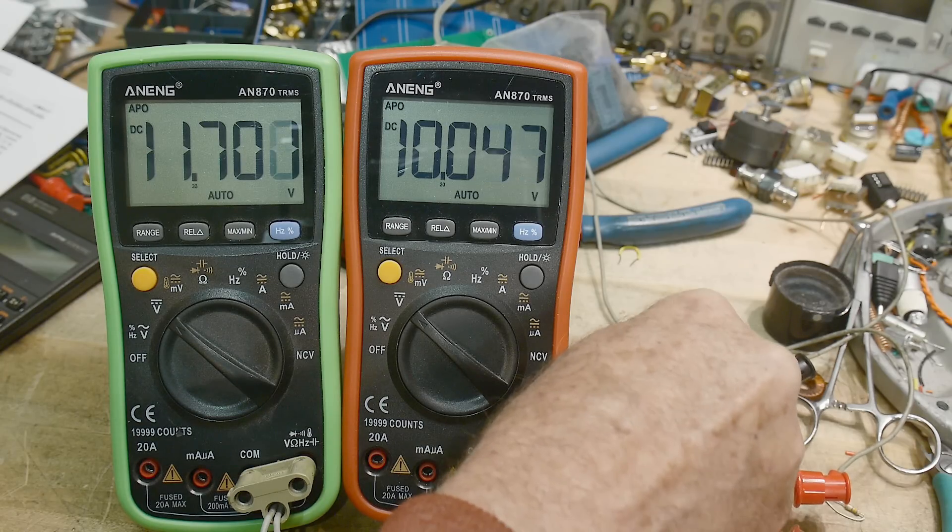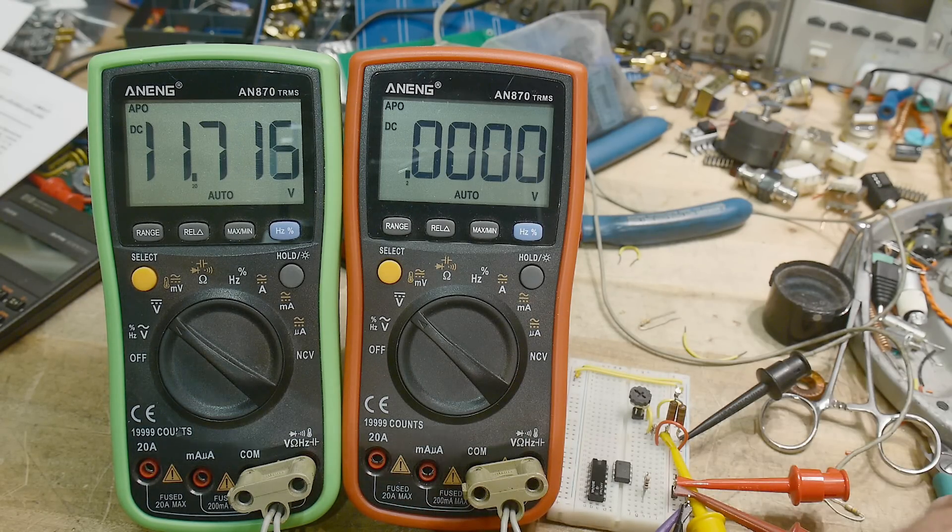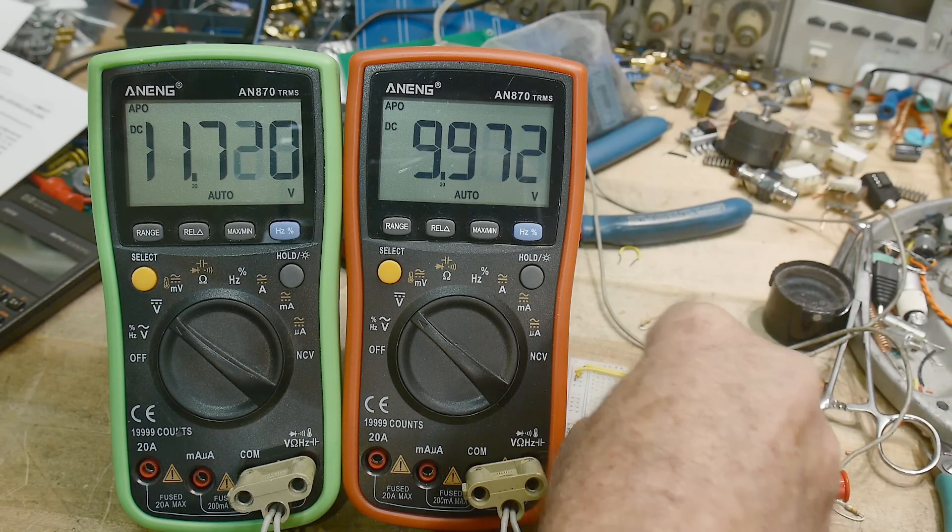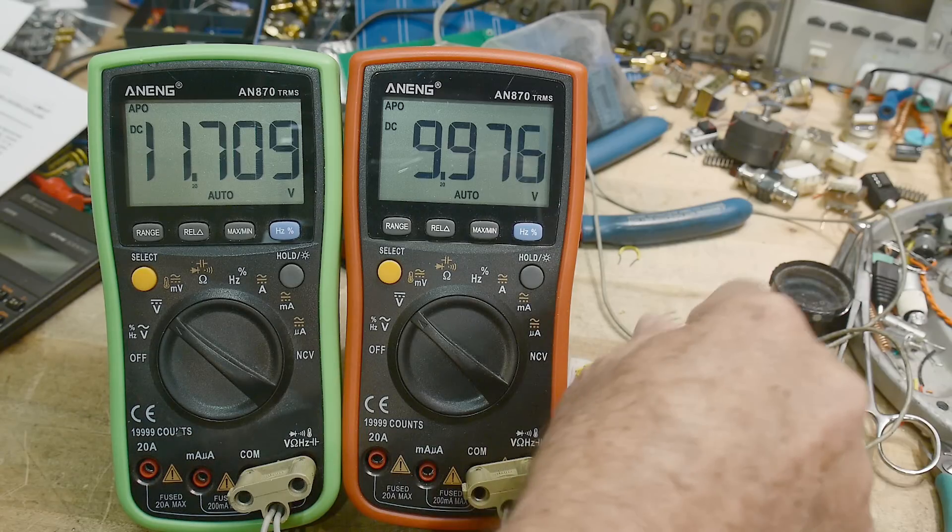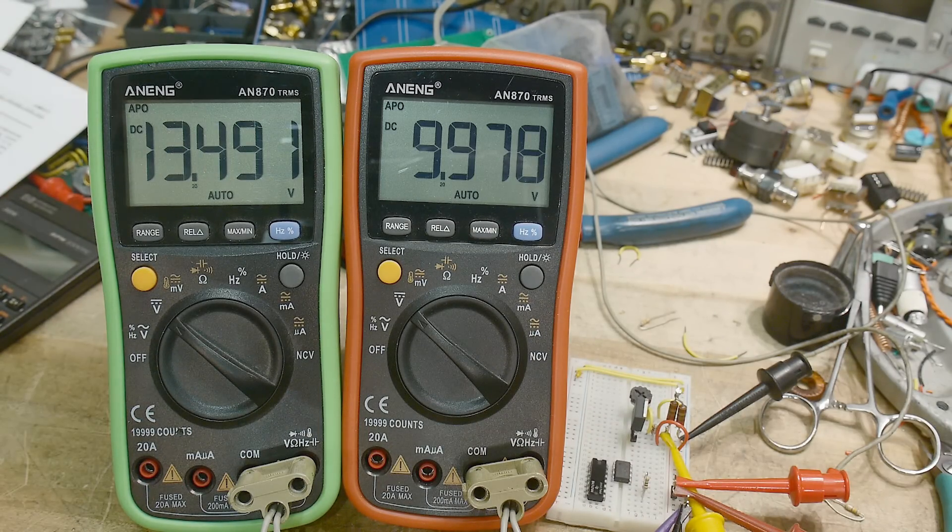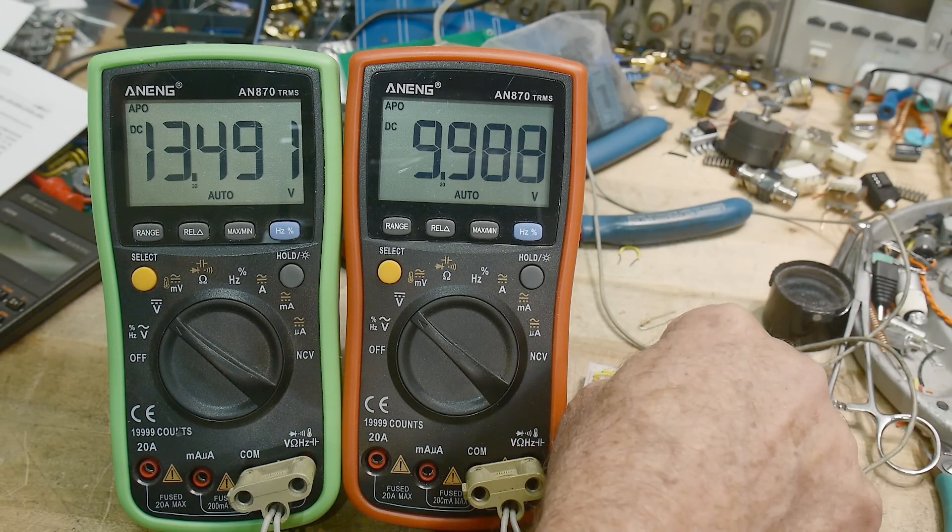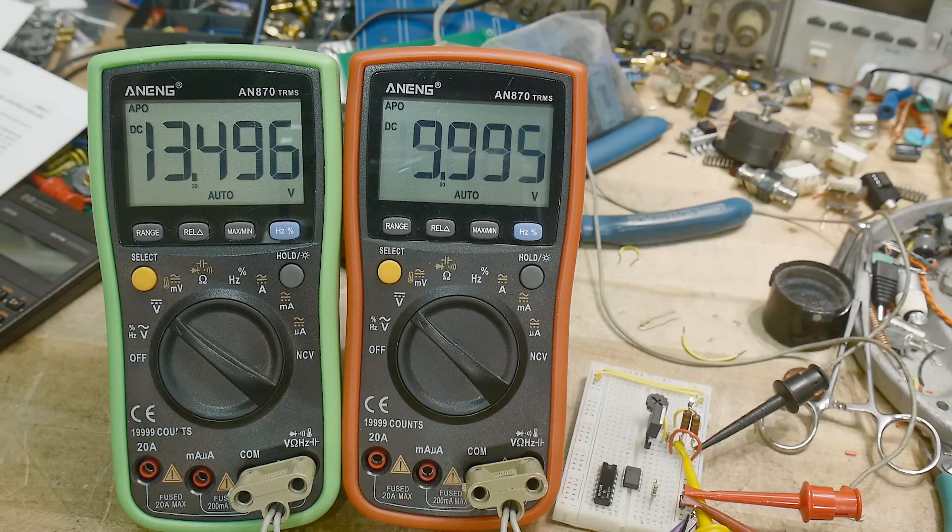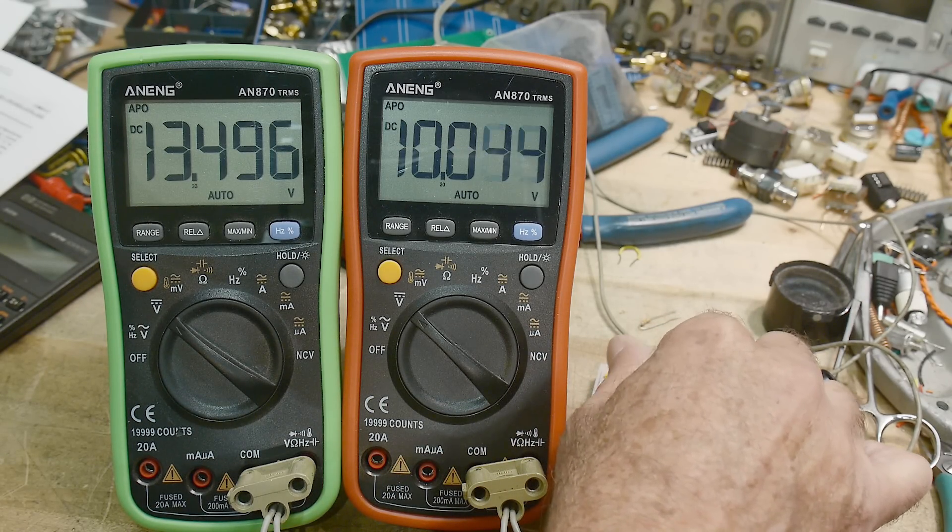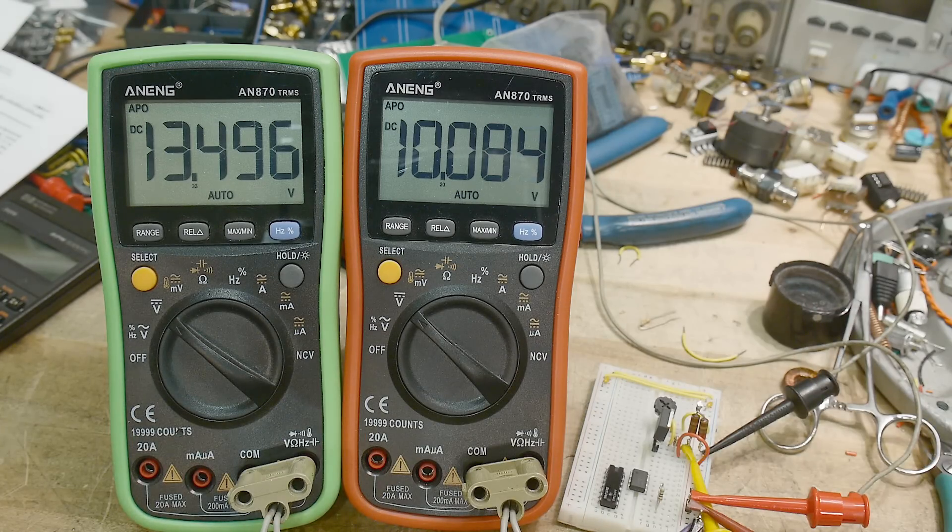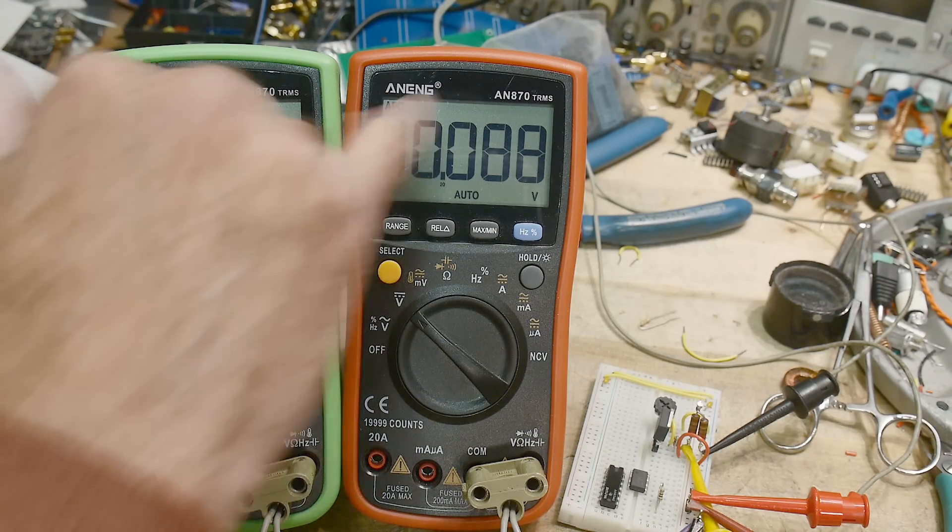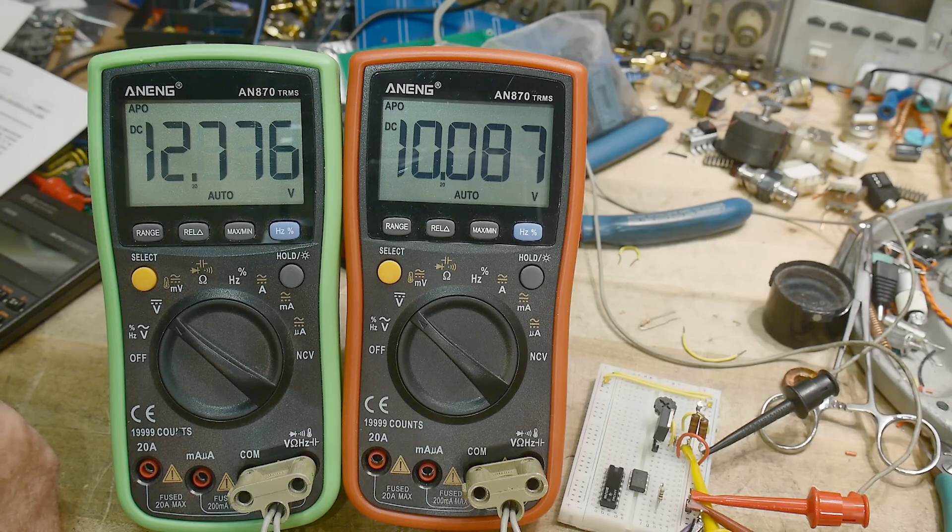So let me take out the 317 and I'm going to put in the other low dropout part and we'll see if it really is low dropout. I'm going to adjust the voltage back up. I'm going to set the 10 volts again. There we go. Let's try to get this thing to settle at 10 volts. There we go.